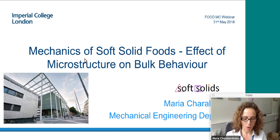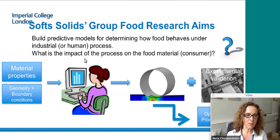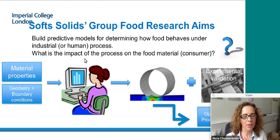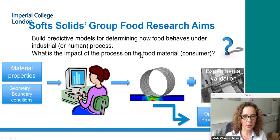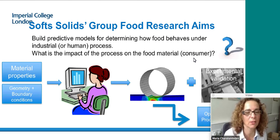The subtitle is 'Effects of Microstructure on Bulk Behavior.' The aim of my group's research is to build predictive models for determining how food behaves, whether in an industrial process or a human process such as oral or gastric digestion. We want to answer questions like: what's the impact of the process on the food material? Because if the food material gets impacted, that will have a direct impact on consumer perception, which is what the food industry is interested in.